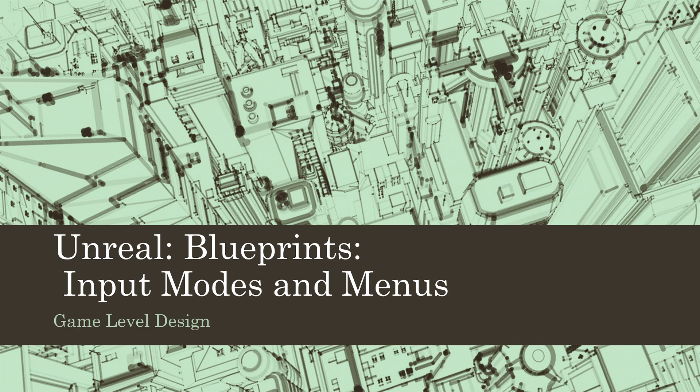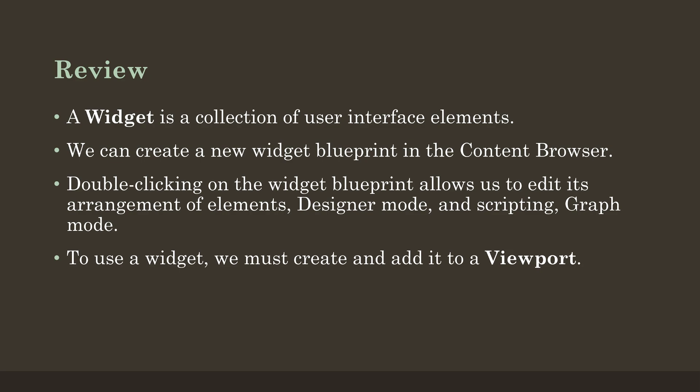Let's start with what we know. First, a widget is a collection of user interface elements — we've previously seen that. We can create a widget and it gives us access to designer mode, allowing us to arrange those user input elements, and also graph mode, allowing us to set up various scripting things. We know we can create a new widget blueprint in the content browser. To use a widget, it's a two-step process: we have to create the widget and then add it to the viewport to actually see it.